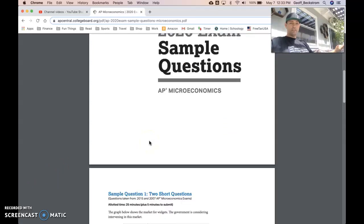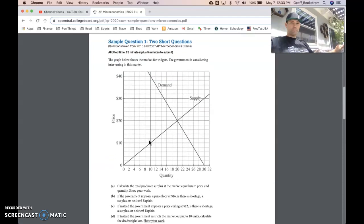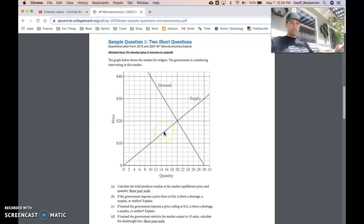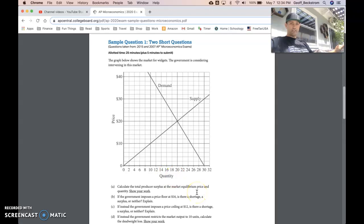You can see those here. So on to the first question. Sample question number one is two short questions so we'll kind of treat it like three questions. Here's our supply and demand graph. Calculate the total producer's surplus at the market equilibrium price and quantity. This is a simple area of a triangle.